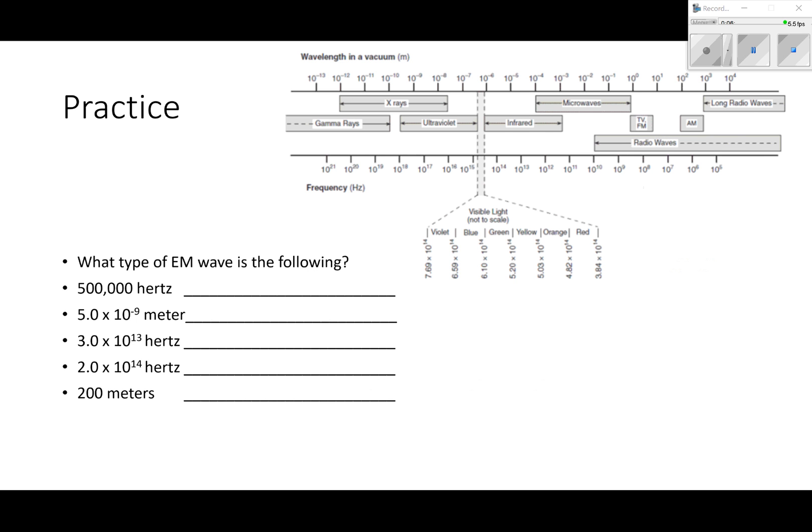Here's some questions. What type of EM wave is the following? 500,000 hertz - that's 5 times 10 to the 5. All you got to do is find 10 to the 5 hertz. That's right here - that's a radio wave. You could put long radio wave if you want.